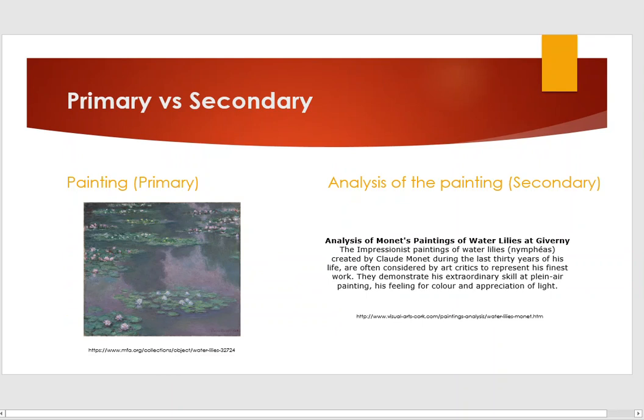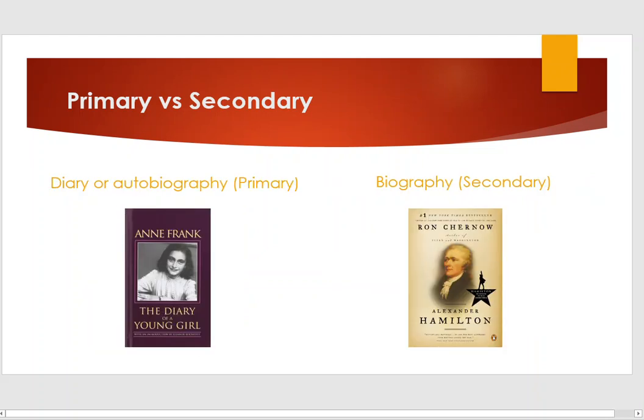Let's look at some examples between primary and secondary sources. Monet's painting Water Lilies is a primary source, while the analysis of the painting would be a secondary source, because it analyzes the primary source. The Diary of a Young Girl by Anne Frank is a primary source because it is a first-hand account.